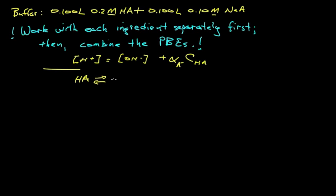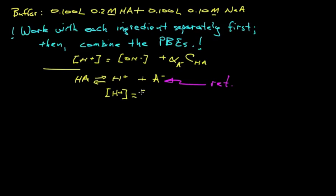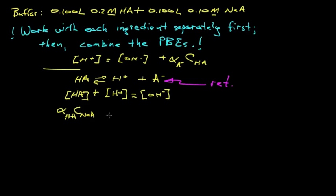For sodium acetate, we use the same equilibrium process. In this case, the reference form is the acetate, so we ignore it in the proton balance equation. Starting again with the proton balance for water, if HA shows up in solution it is more protonated than the reference species, so it appears on the left-hand side — the winner's side. Rewriting in terms of the analytical concentration of sodium acetate, we multiply by the distribution coefficient α(HA).